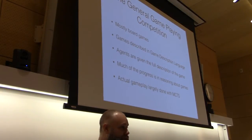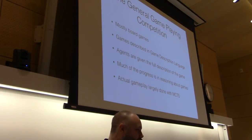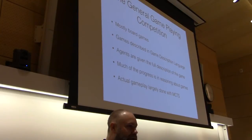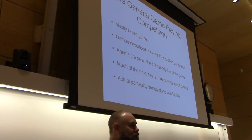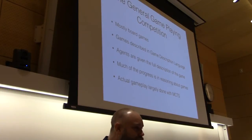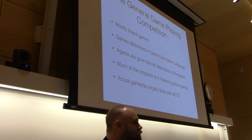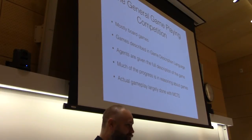Agents are given the full description of the game plus some time — about an hour — to basically crunch the description, reason about it, come up with the best way of playing, and then play. Playing is typically done with Monte Carlo Tree Search. Has anyone never heard of Monte Carlo Tree Search? It's a beautiful algorithm that came out of research on Go around ten years ago — a statistical search algorithm, a bit like minimax.